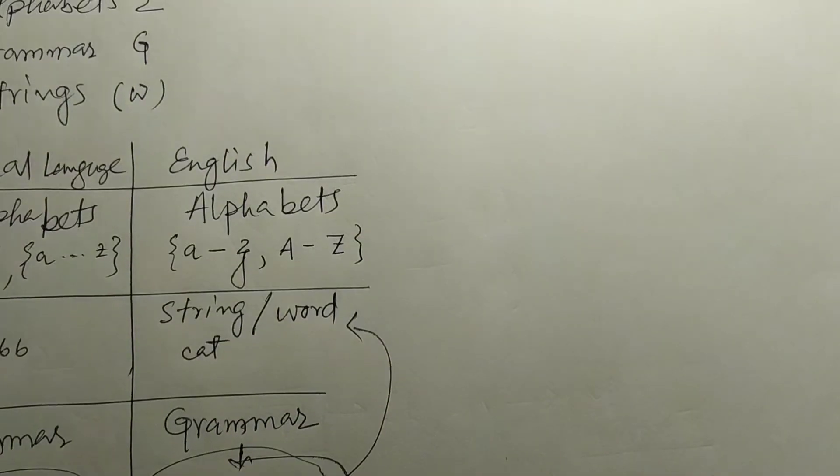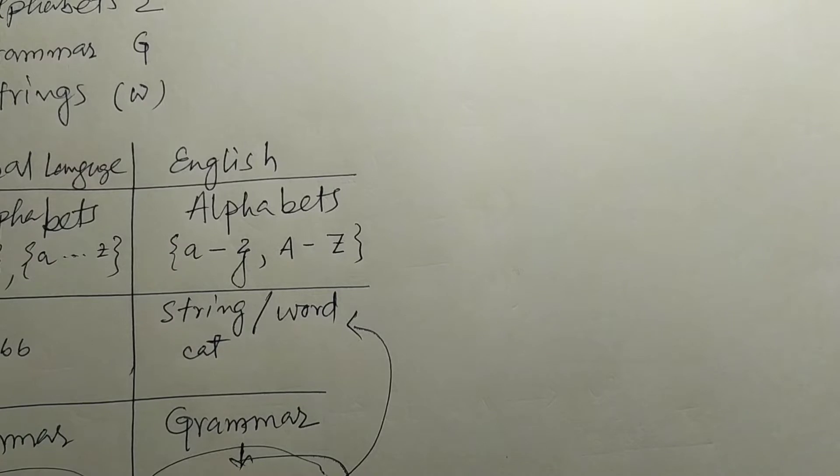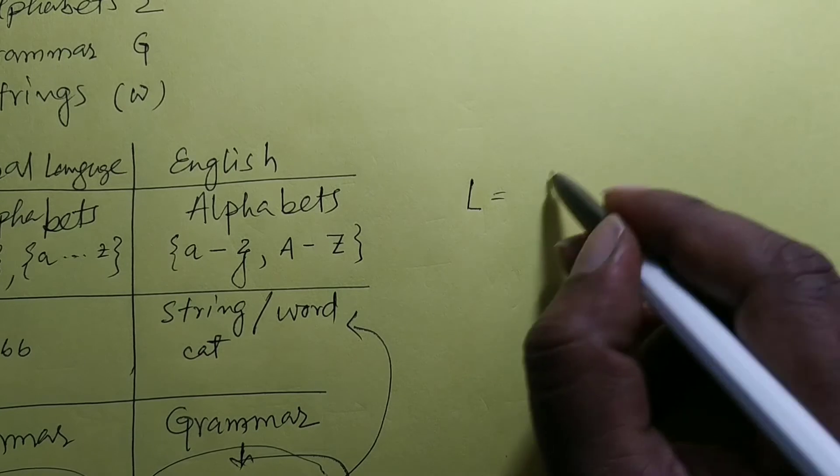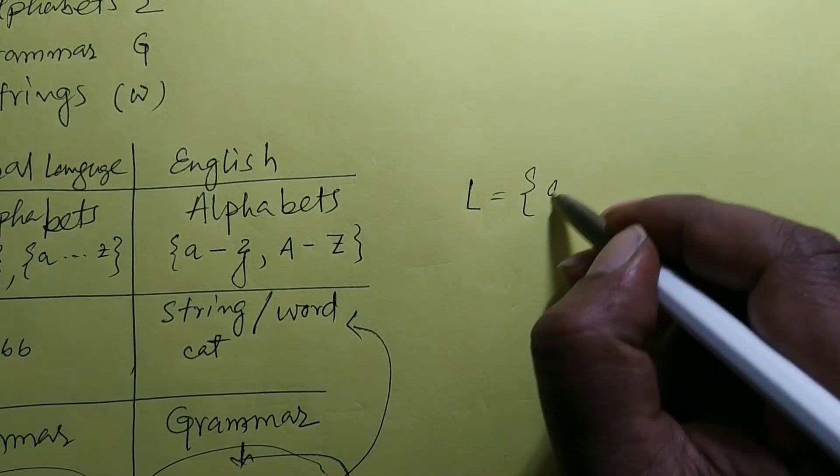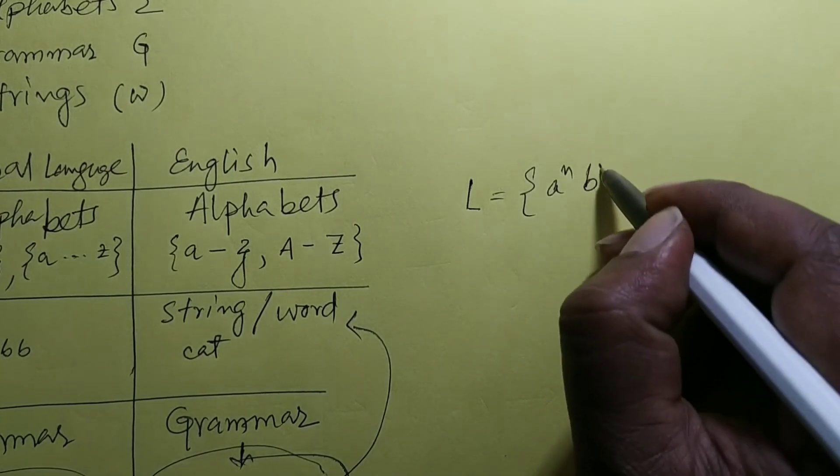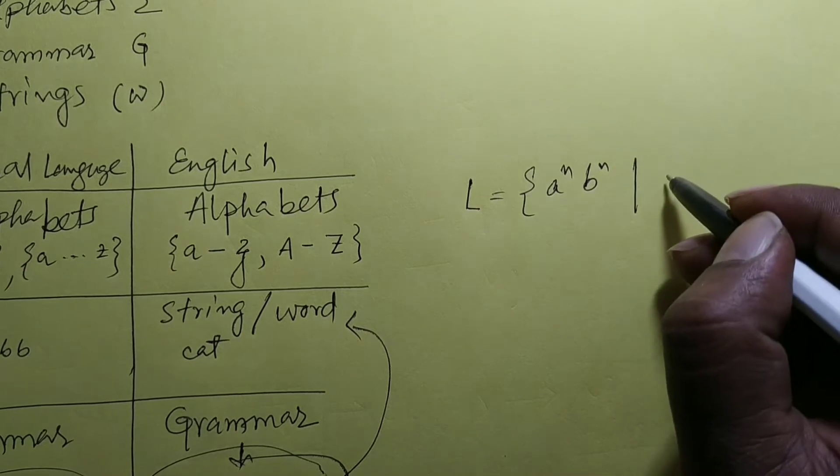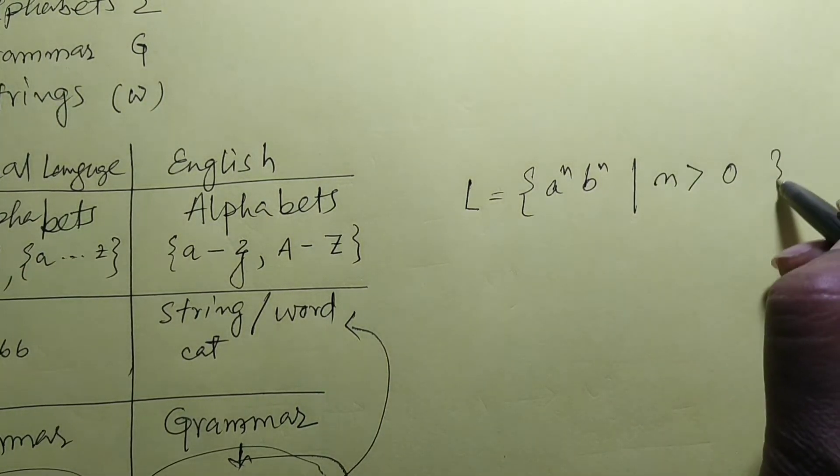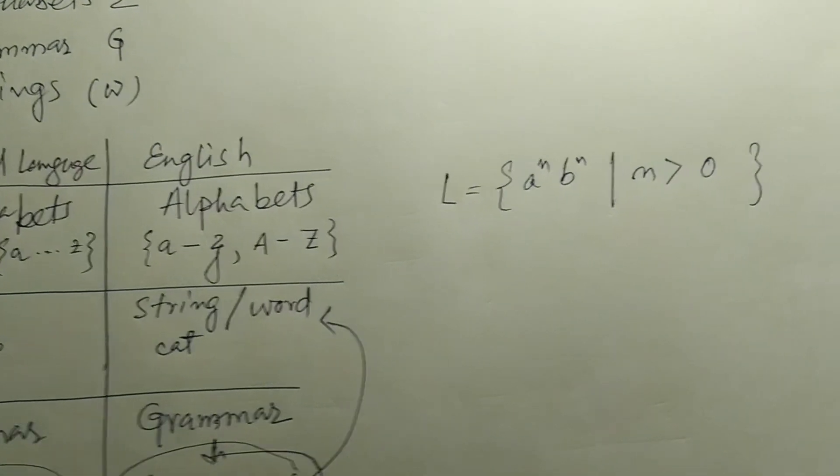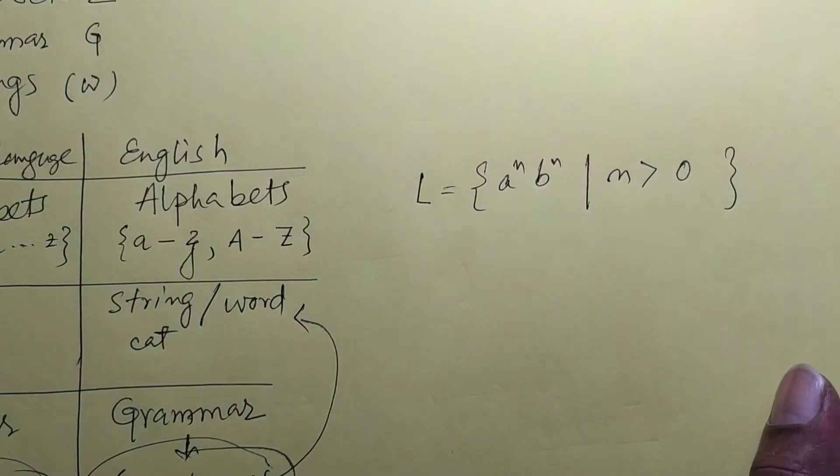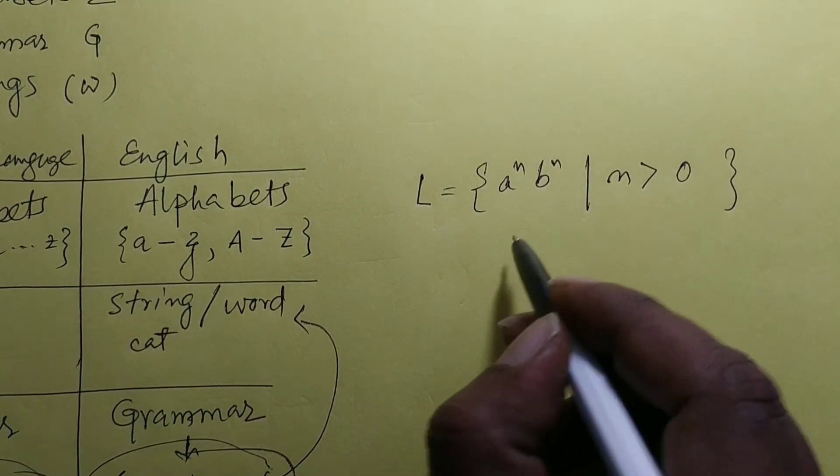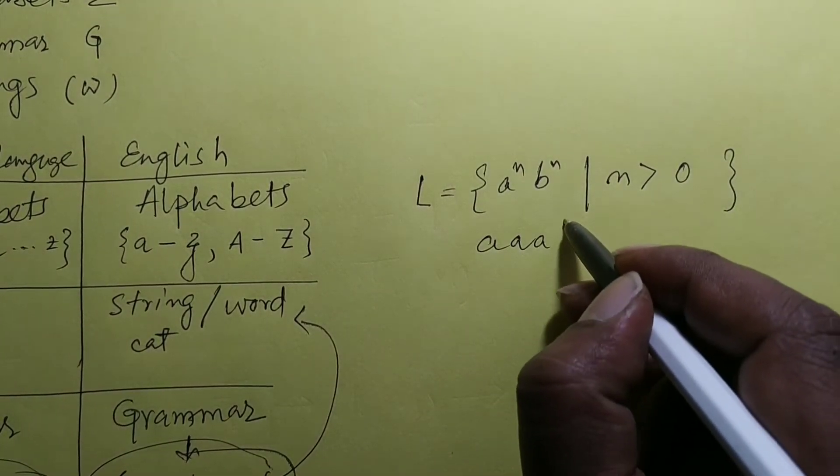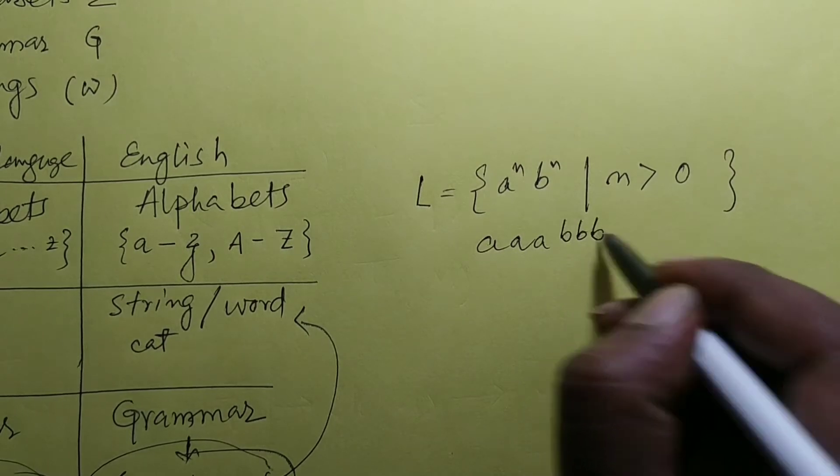Now if you think about a grammar here in formal language and automata - say we want to generate or you have a language which is in this form: a to the power n b to the power n such that n is greater than 0. That means it can generate any string where n number of a's followed by n number of b's.